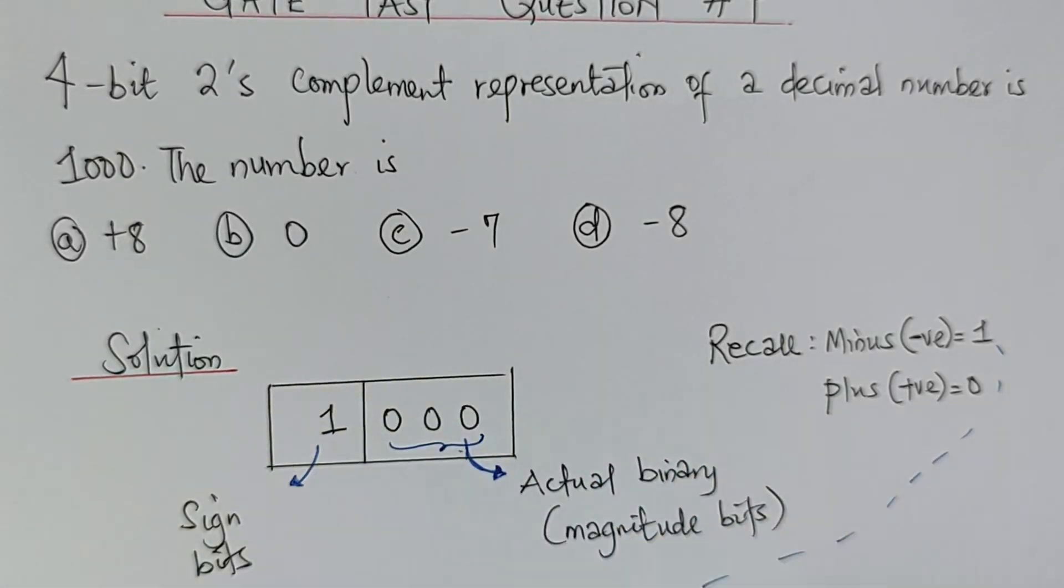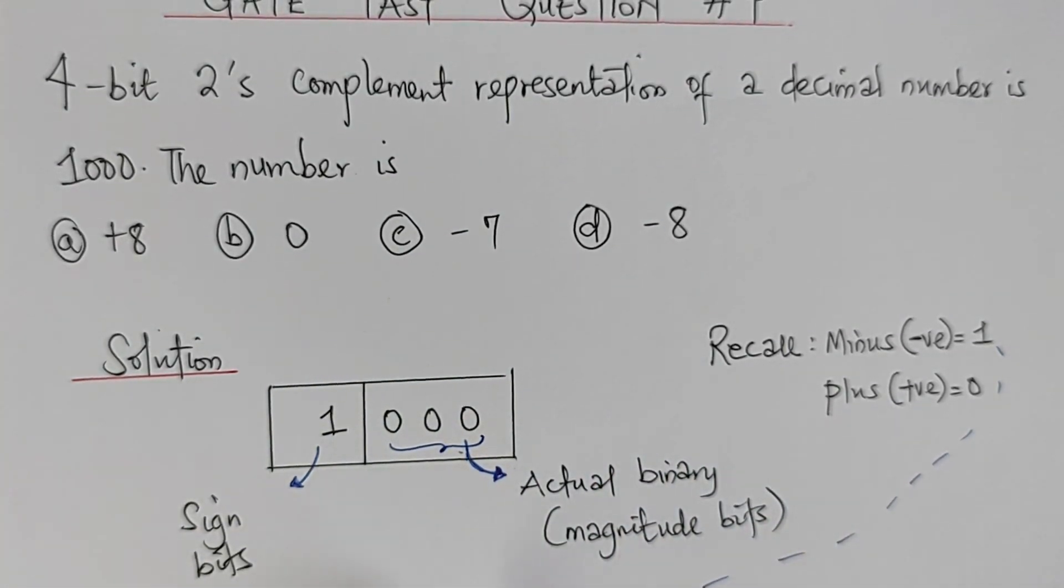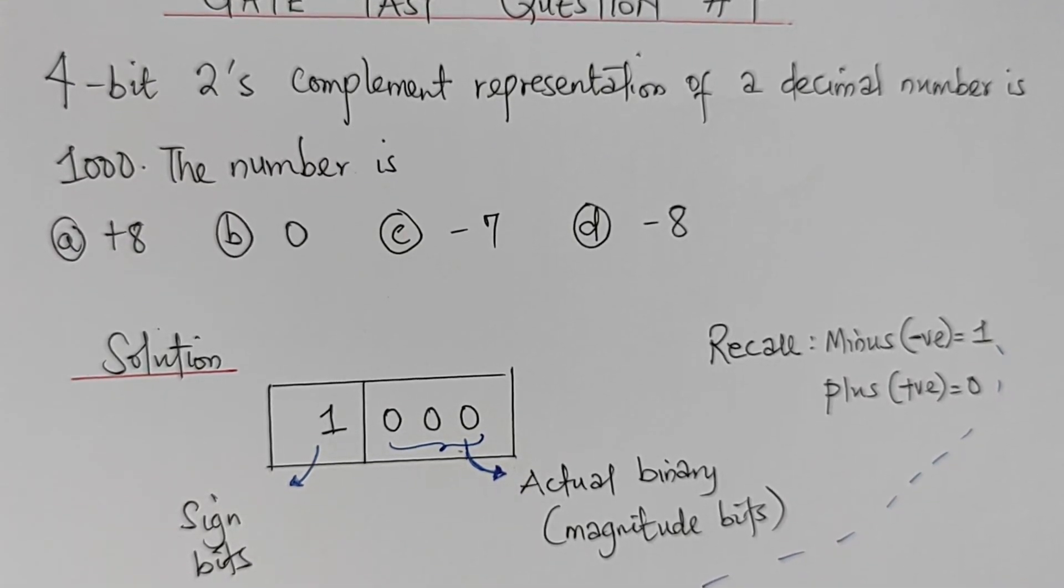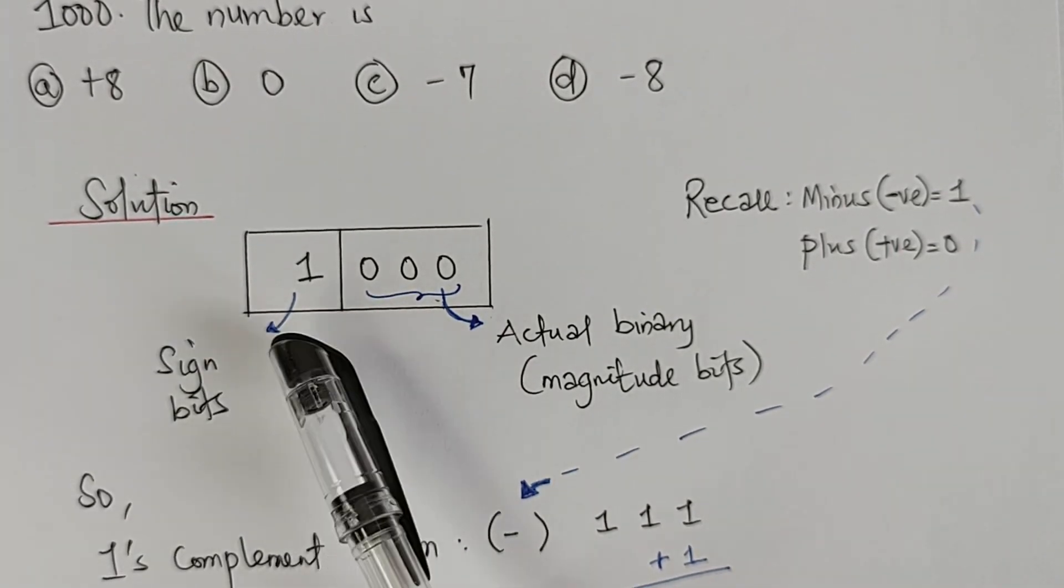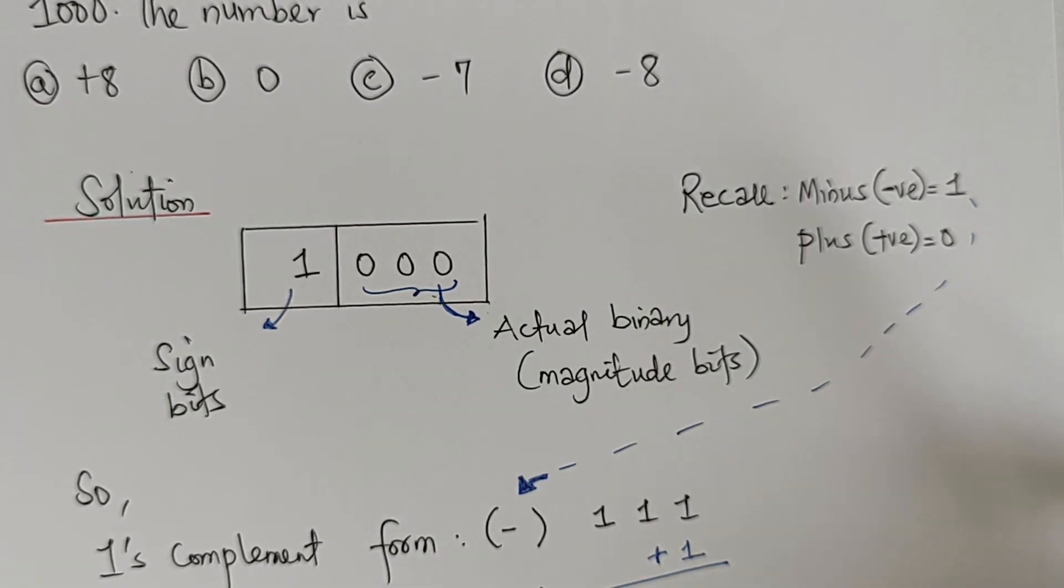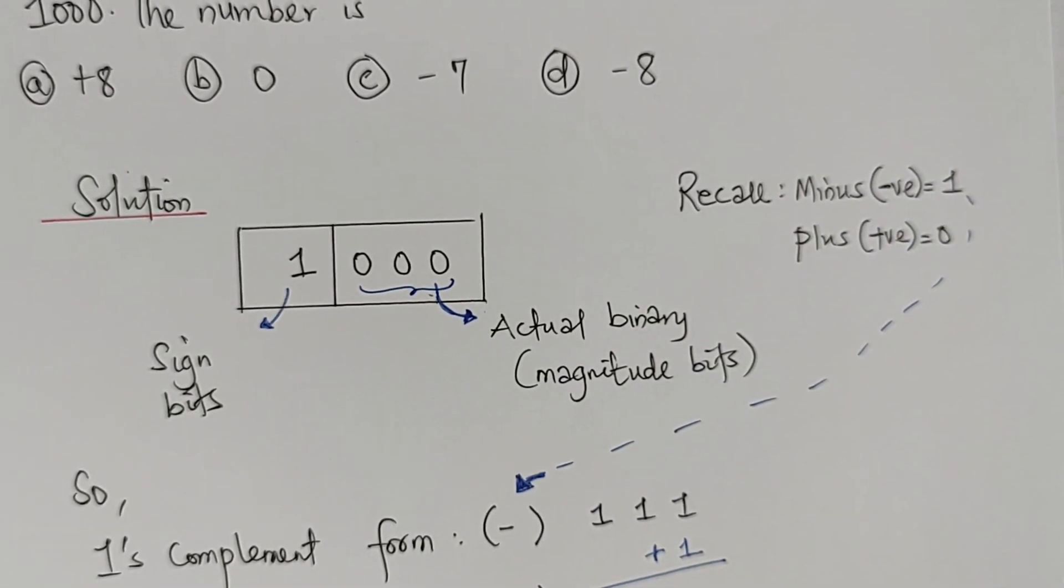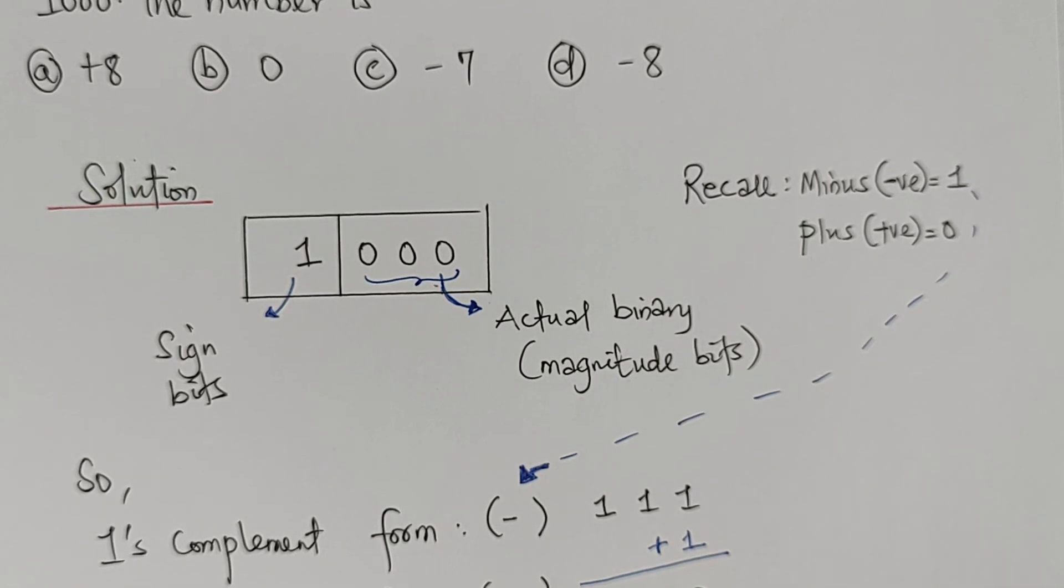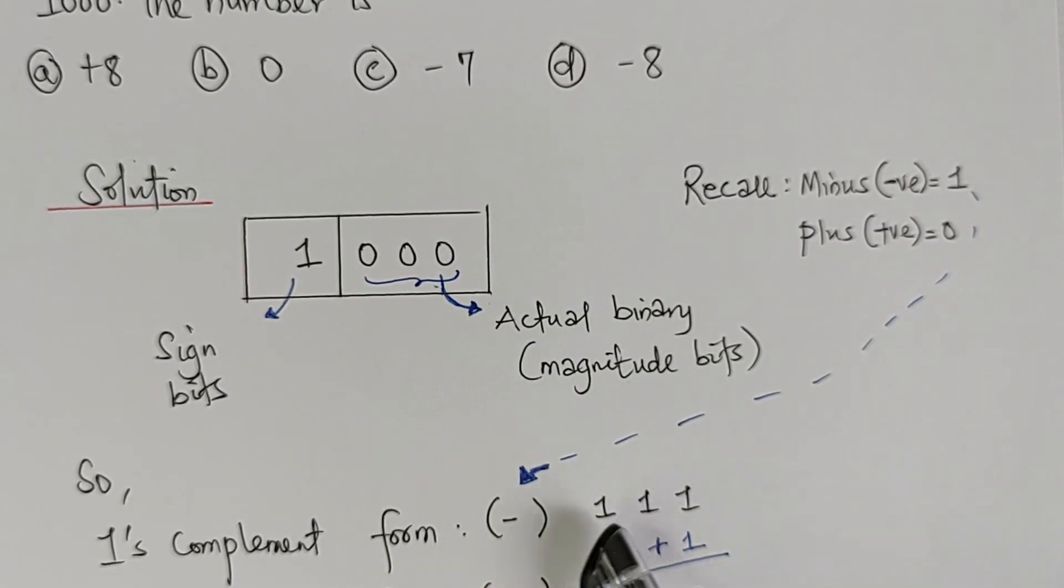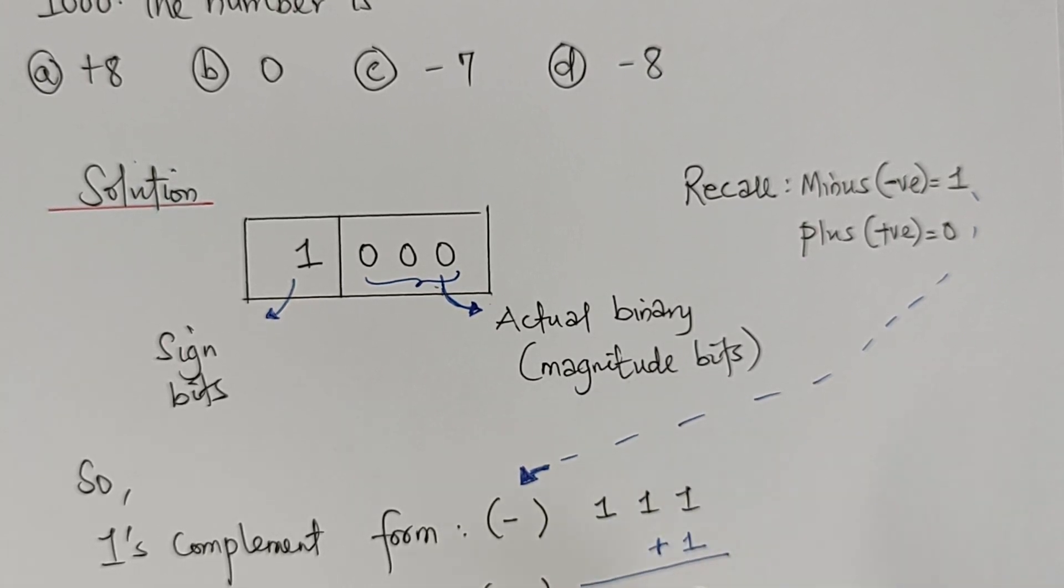With that, for what we have here, we are going to take this value and quickly look for our first complement form, second complement form. Our first complement, since we have 1 here, it's actually going to be negative. For the first complement, when you have a particular bit, let's say bit 1, to get the complement, it's going to be the opposite. That means from 1 to 0, since we are dealing with binary. We have 000 here. For the 1's complement, it's going to be converted as 111.